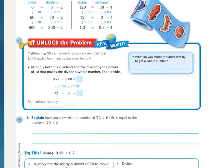Unlock the problem. Matthew has 72 cents. He wants to buy stickers that cost 8 cents each. How many stickers can he buy? Underline what you're being asked to find and circle the important numbers. You should have underlined how many stickers can he buy and circled 72 cents and 8 cents. We know that this is division because we're starting with the total and it's 8 cents each.